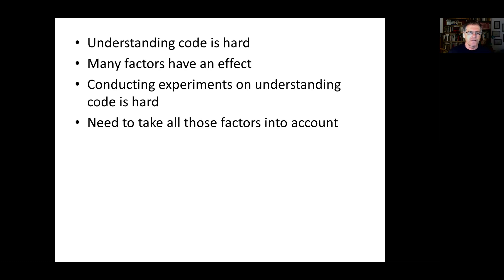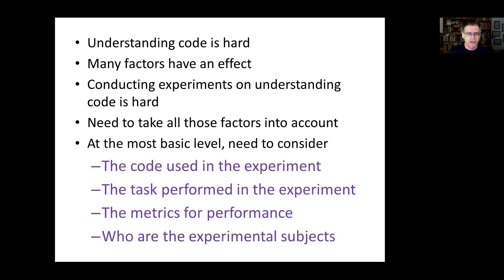The major realization is that there are many factors that have an effect on how hard it is to understand code. However, conducting an experiment on understanding code is also hard, because all these factors need to be taken into account. At the most basic level, you need to consider four factors. One is the code used in the experiment. Two is the tasks that require the experimental subjects to perform. Three is the metrics which we use to measure their performance, and four is exactly who are the experimental subjects to begin with.